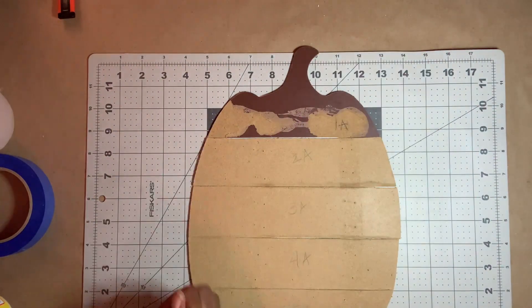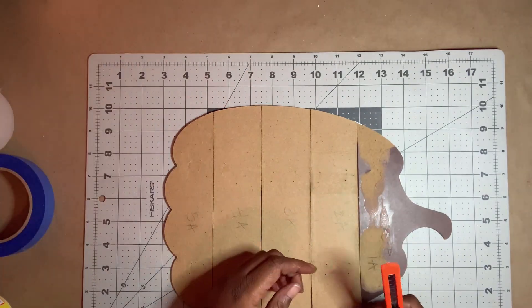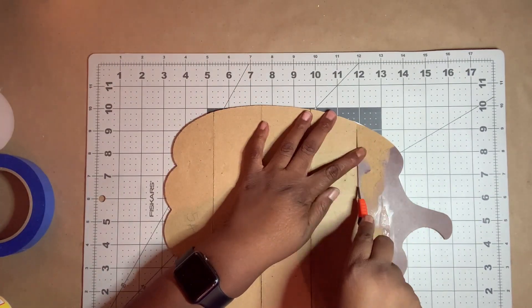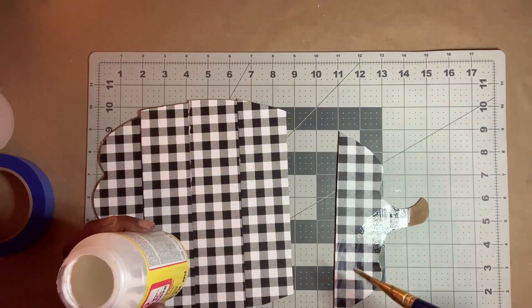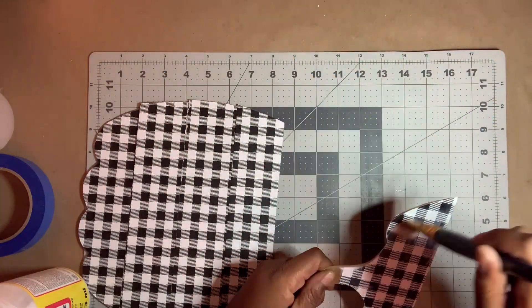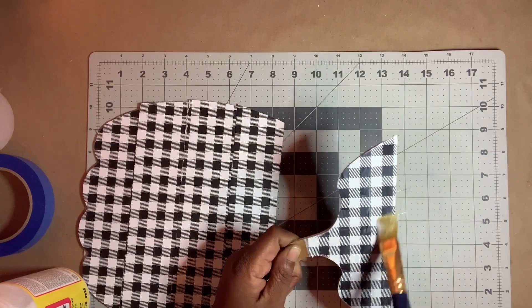Once dry, I removed the tape from the back and cut the pumpkin apart. Then I applied a thin coat of matte Mod Podge on the individual pieces and let them dry completely.